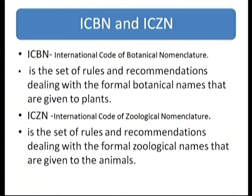You will see two important codes in your book: ICBN (International Code of Botanical Nomenclature) and ICZN (International Code of Zoological Nomenclature). If you need to classify and name a plant species, you must follow the rules and recommendations of ICBN. If it is an animal species, you must follow the rules recommended by ICZN.